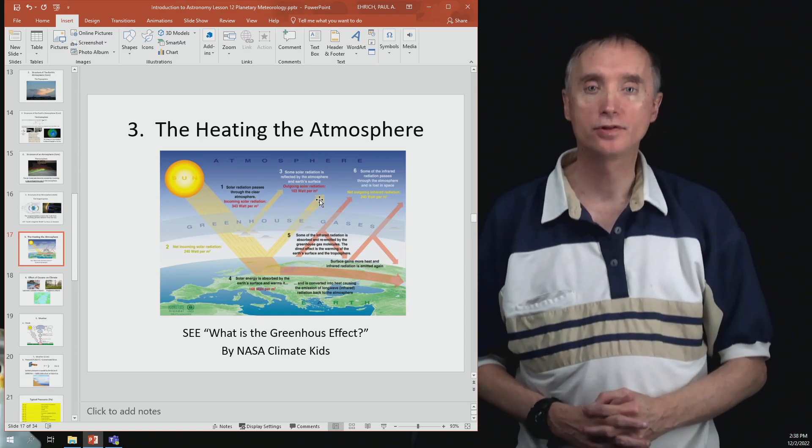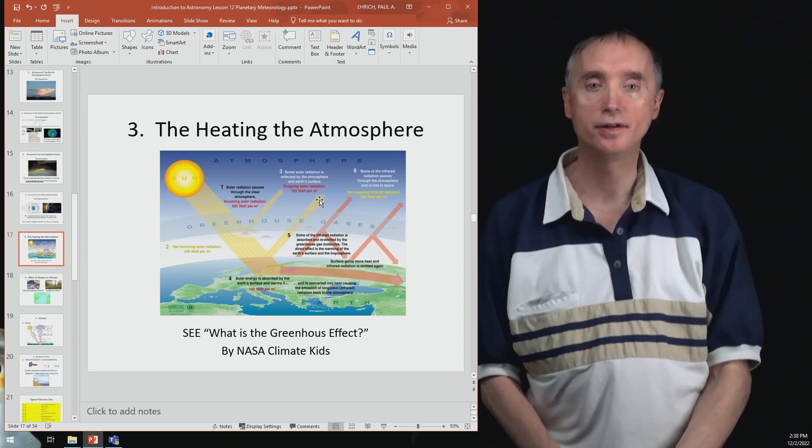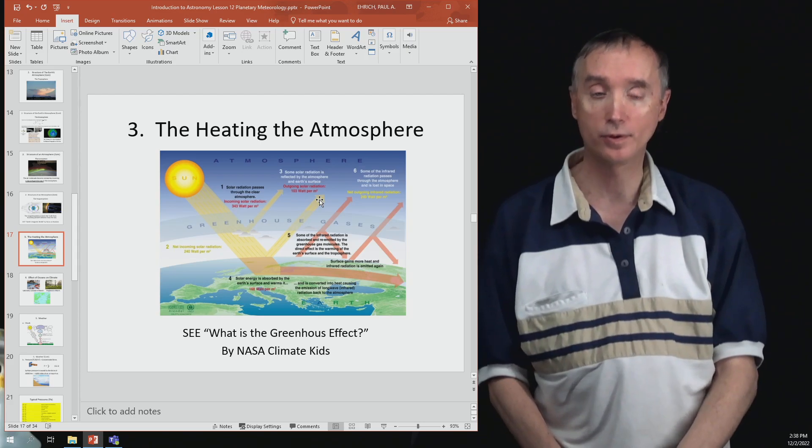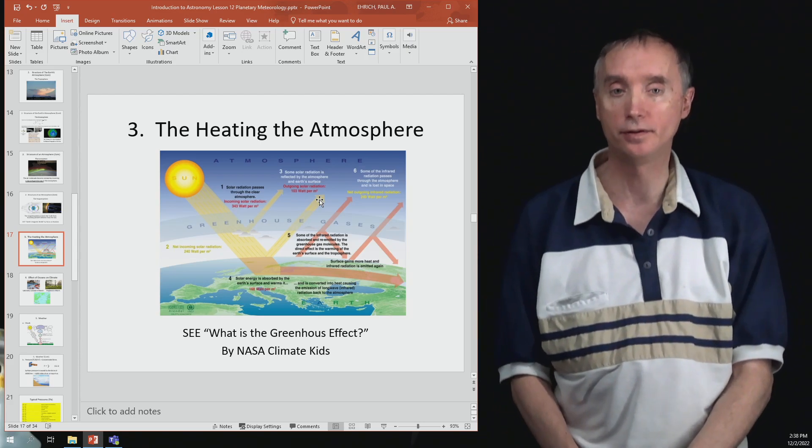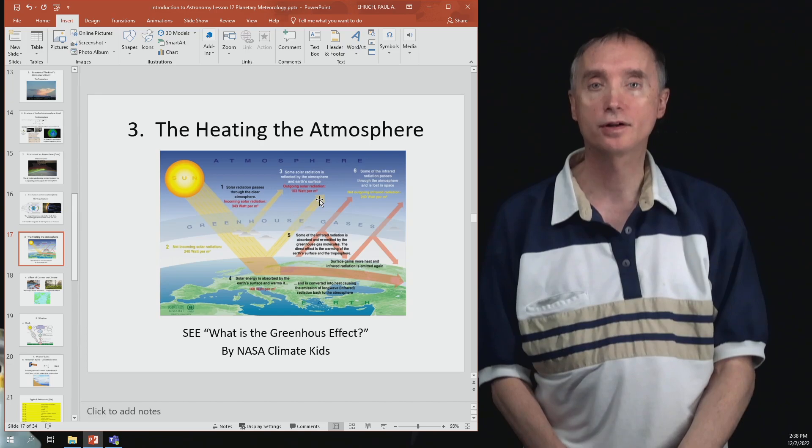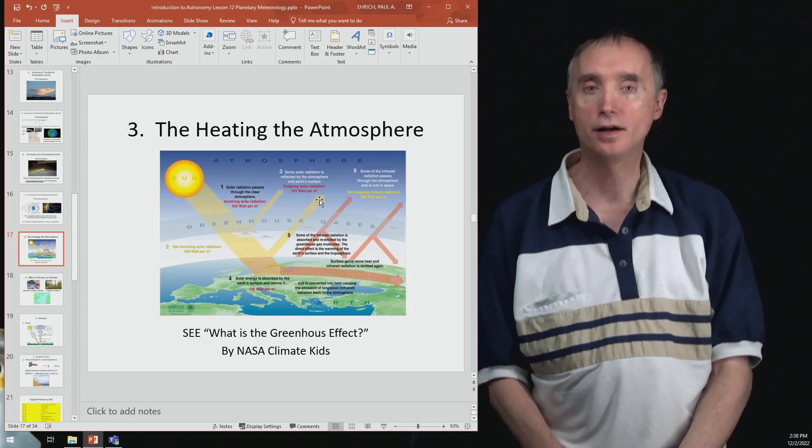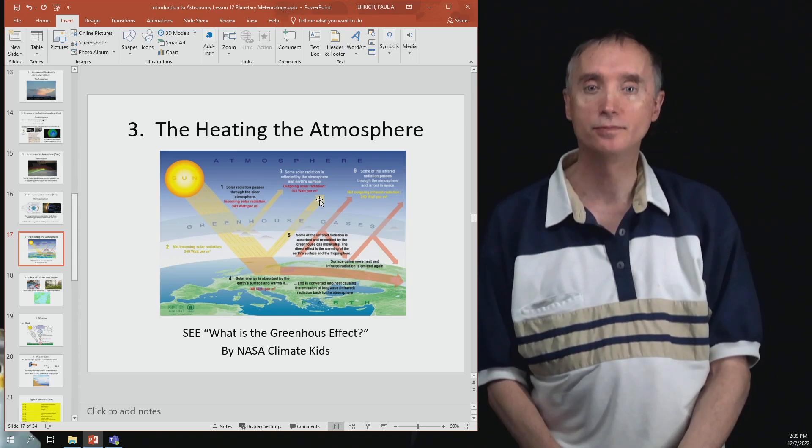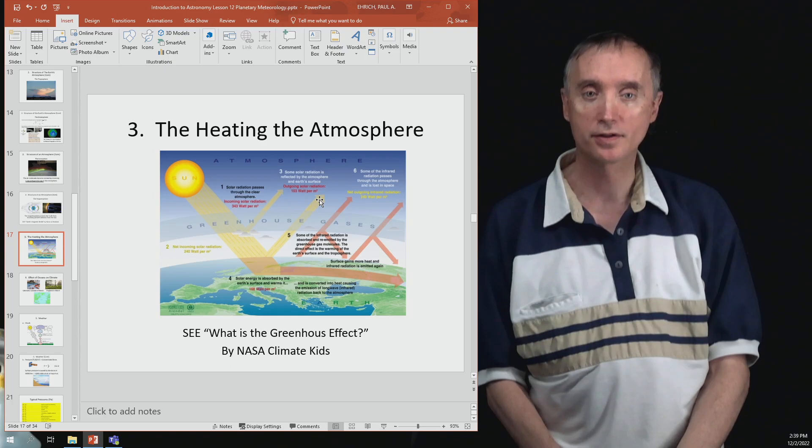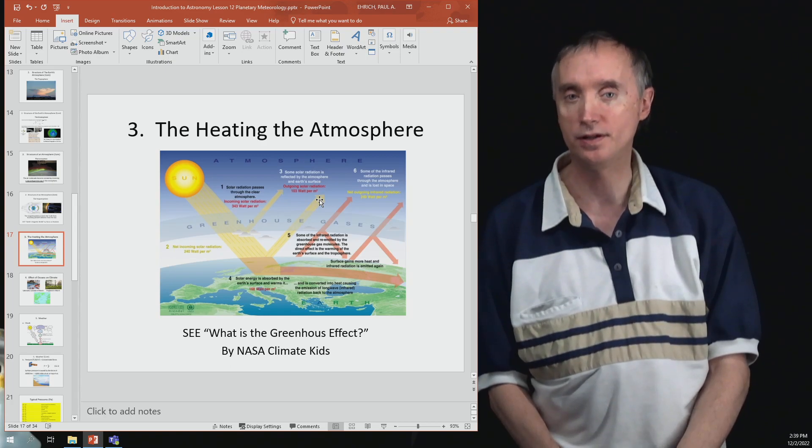I'm back and now we're going to talk about how the Sun heats up the Earth's atmosphere. We've already talked about this a little bit when we discussed the climate of Venus, and we said that Venus was so hot because the heat was being trapped by the atmosphere. So let's talk about that in a little bit more detail.